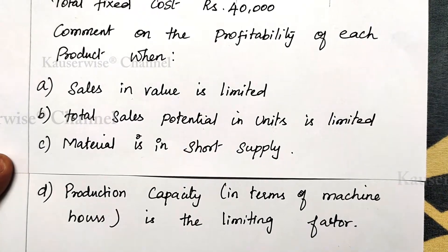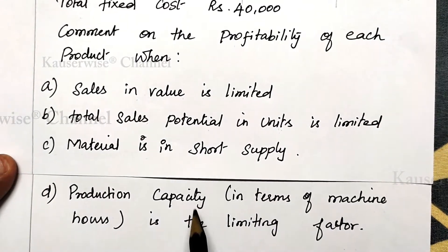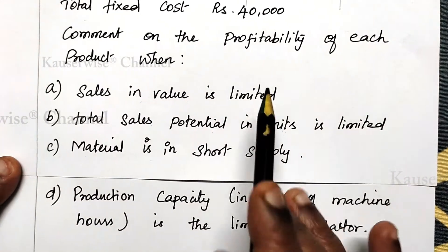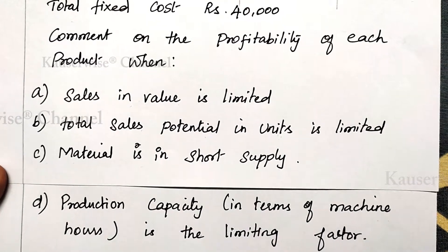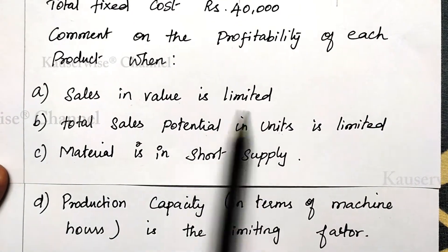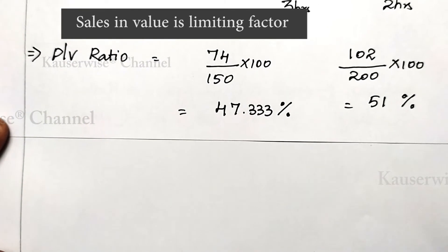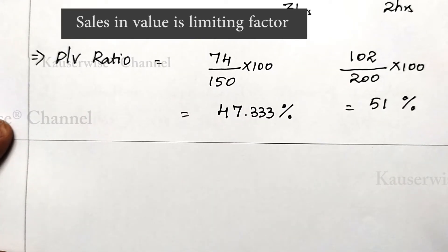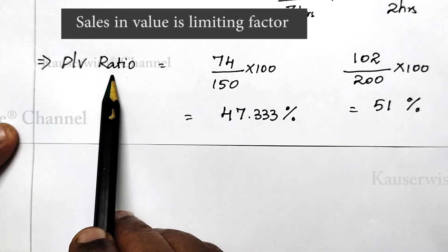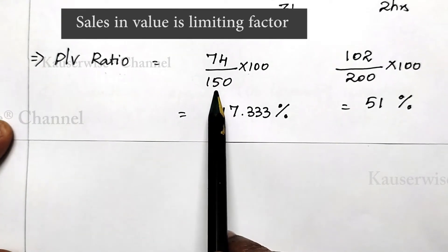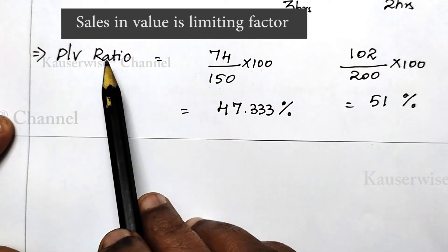The second step is contribution divided by limiting factor. We have four different limiting factors, so we are going to divide the contribution per unit by the limiting factor. Look at the first key factor: sales in value is limited. In that case, we need to calculate PV ratio. The formula for PV ratio is contribution per unit divided by selling price per unit, into 100.